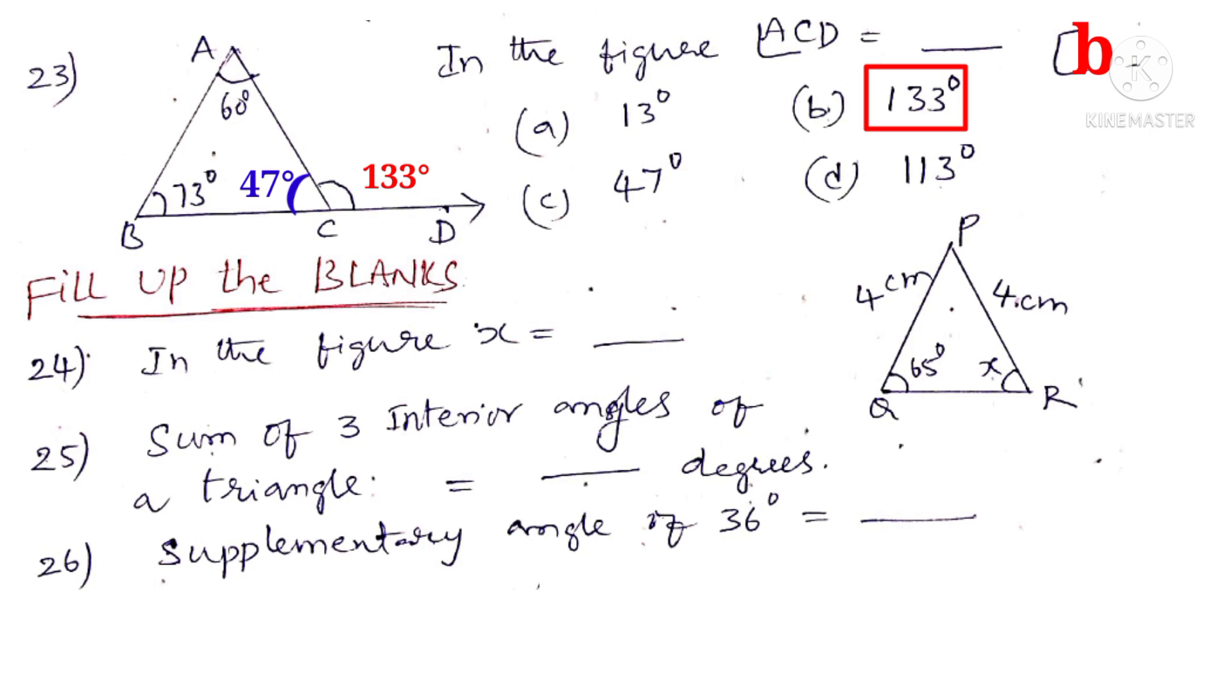Fill out the blanks. 24th question. In the figure X is equal to dash. Observe that in triangle PQR, PQ and PR both are equal sides. Both have the same length 4 centimeters. So the angles opposite to that sides also equal. So 65 degrees. So 65 degrees and X both are equal. So we can say that X is equal to 65 degrees.